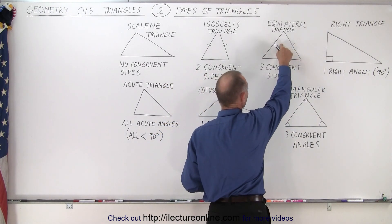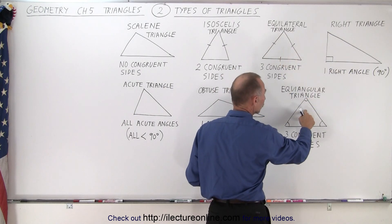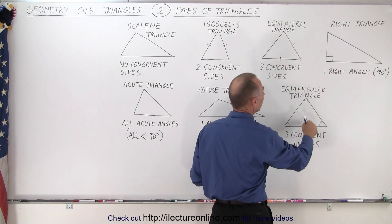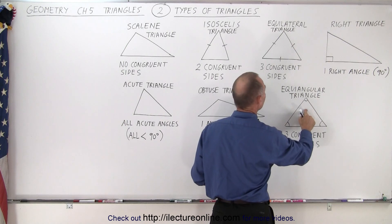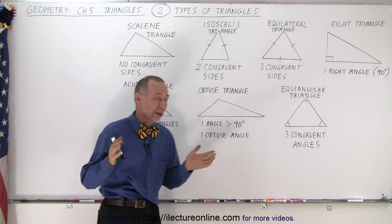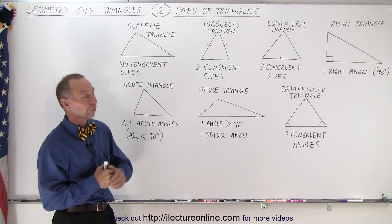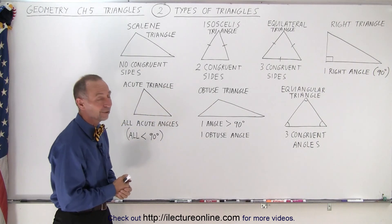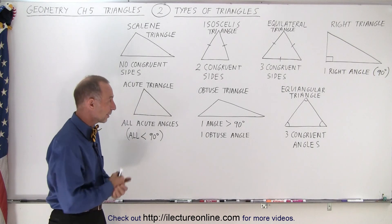So therefore an equilateral triangle is by definition also an equiangular triangle and an equiangular triangle is by definition also an equilateral triangle. So that's why I said there's only six different types on the board but there's seven different names and that's what they are right there.